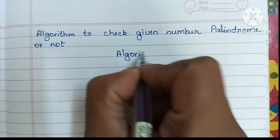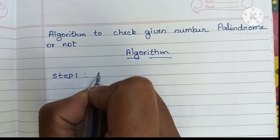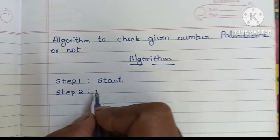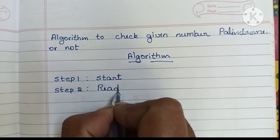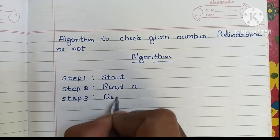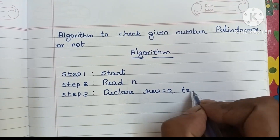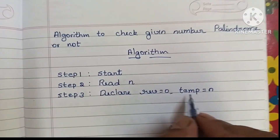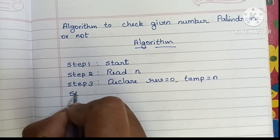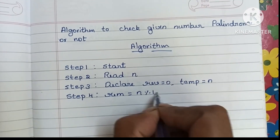An algorithm is a step-by-step process to solve a problem. Step 1: the algorithm always starts with a start statement. Step 2: read the input — read n. Step 3: declare reverse equal to 0 and declare variable temp equal to n, so temp stores the input value. Step 4: find the remainder using the formula n modulo 10.